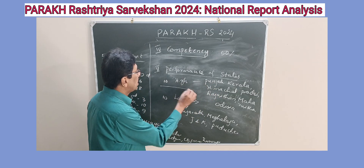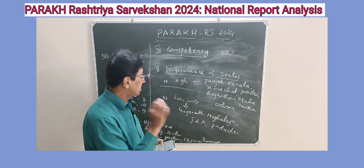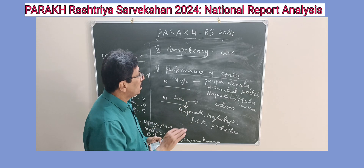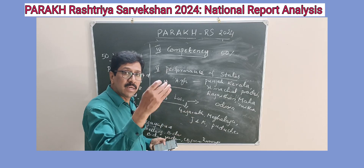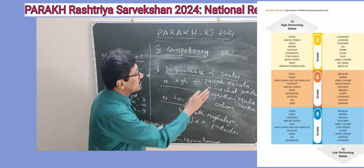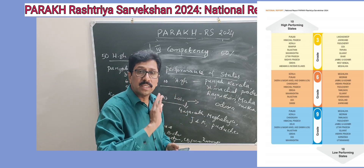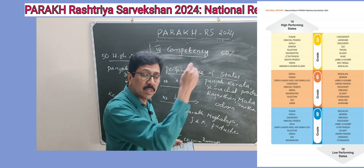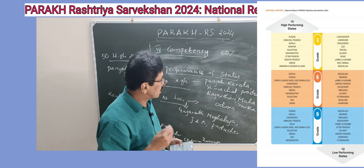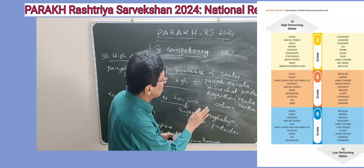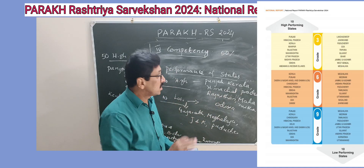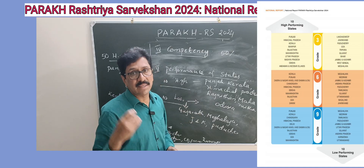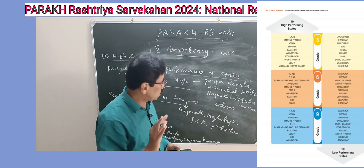The report mentions 10 high-performing districts and 10 low-performing districts. Among the high performers, Punjab shows excellent performance in all three classes. Kerala, Himachal Pradesh, Rajasthan, Maharashtra, and Vadodara are common high-performing states across all three classes.